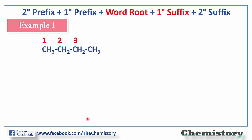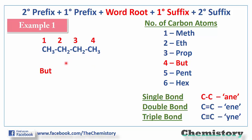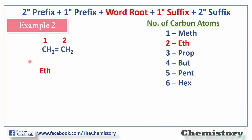Example number one: a chain of four carbons is given. Referring to the word root table, for a four-carbon chain the word root is 'but'. All carbon-carbon bonds in this compound are single bonds, so the primary suffix will be 'ane'. Combining word root and primary suffix, the compound's name becomes 'butane'.